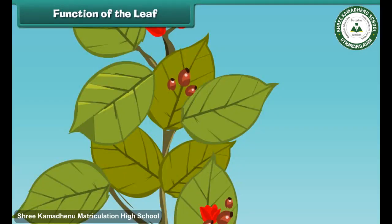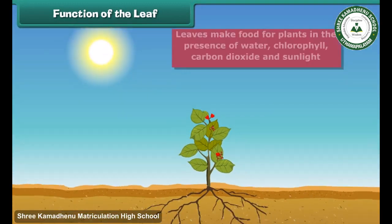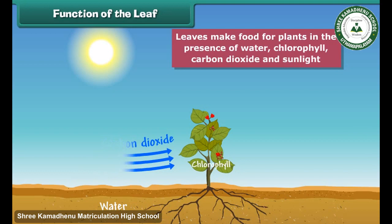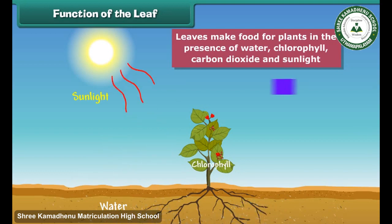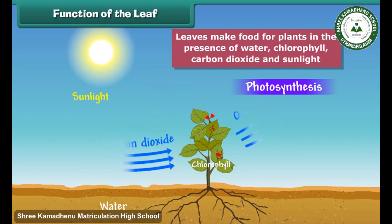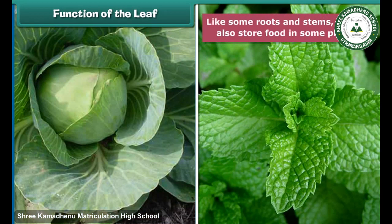The main function of a leaf is to make food for the plant. For making food, leaves use water, chlorophyll, carbon dioxide and sunlight. This process of making food is called photosynthesis. In this process, oxygen is released, and all living things require oxygen for breathing. Some plants like cabbage and mint store food in their leaves, and we eat these leaves to get nutrition.